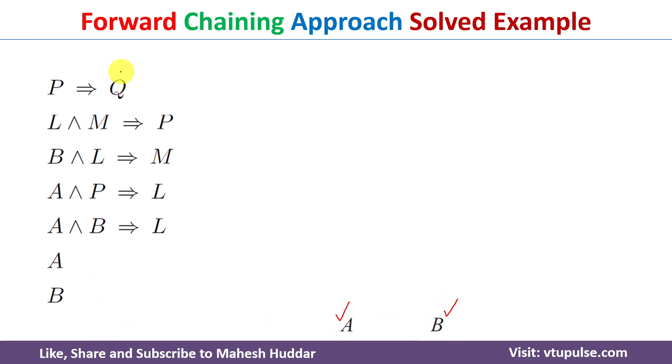Now what we can do is to get to this Q, we will select some of these rules where A and B are present. If you look at this particular rule, A and B, A is true and B is true.